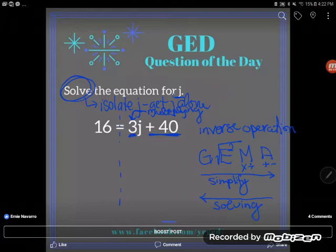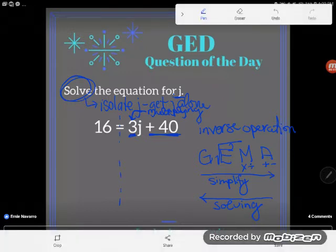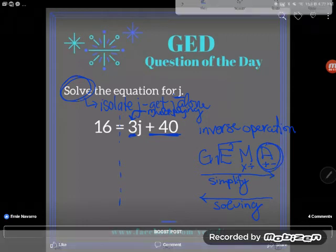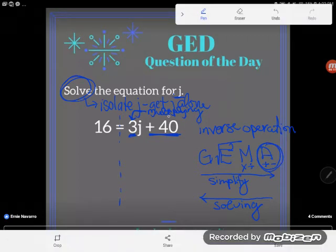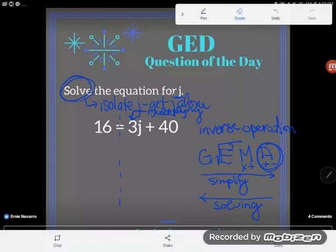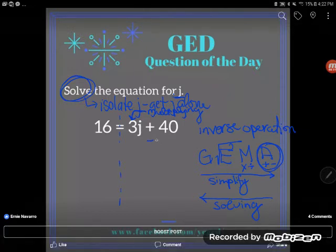So the first thing you should send packing when you're solving is any number that's adding or subtracting with J. Well I can see that this 40 is adding with J, so that is the first number I am going to get rid of. I am going to get rid of the 40 first because I want to send anything adding or subtracting. I want to take the terms away first when I solve. So in order to do that, I'm going to need to do the opposite of adding 40. The opposite of adding 40 is subtracting 40.